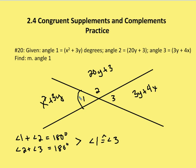We know from our theorems on congruent supplements and complements that if angle 1 plus 2 is equal to 180 degrees — so angle 1 is supplementary to 2 — and angle 2 plus 3 is equal to 180 degrees, which means that 3 is supplementary to 2, then if I have two angles that are supplementary to the same angle, then they are congruent to each other. So I know that angle 1 and angle 3 are congruent.